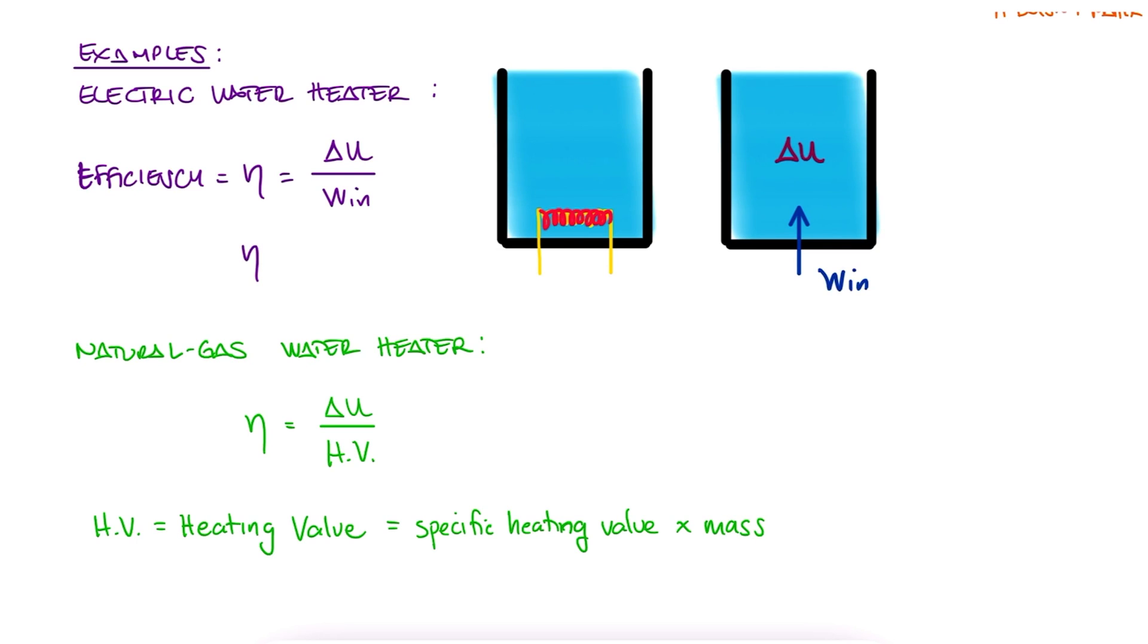The first one is usually close to 100% efficiency, and the second one is around 58% to 62% efficient. So why would the natural gas be, overall, more cost effective?